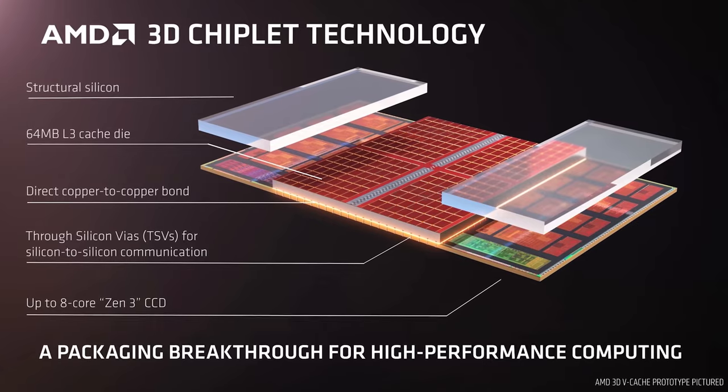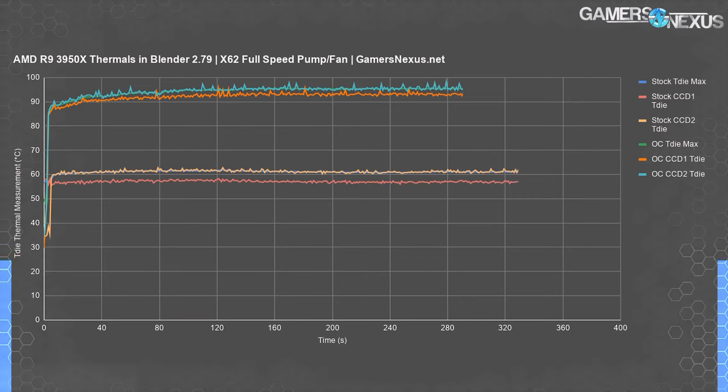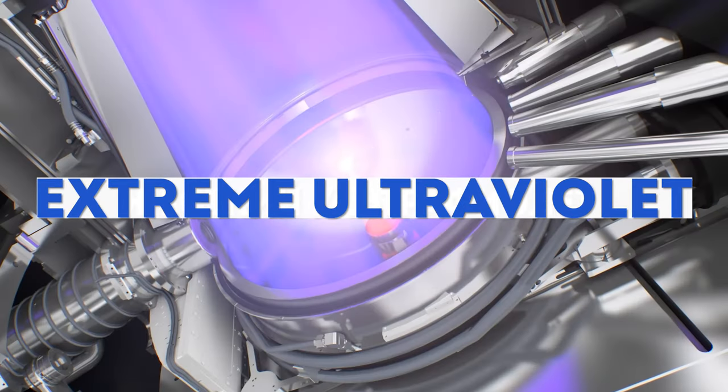But I will repeat myself: chiplets are still a workaround. In the case of Ryzen, tiny pieces of silicon the size of a fingernail are easily heated to 100 degrees. And as a result, we again come to the same conclusion: we need to shrink the transistor size.